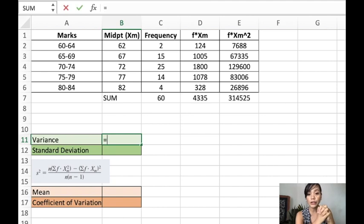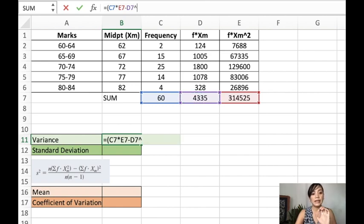Now let's solve for the variance. For the variance, what we will do is we will use this formula. We have n multiplied to this one, and we minus it to this one, but raised to 2. Again, n multiplied to f midpoint squared minus f midpoint, product of f midpoint raised to 2.